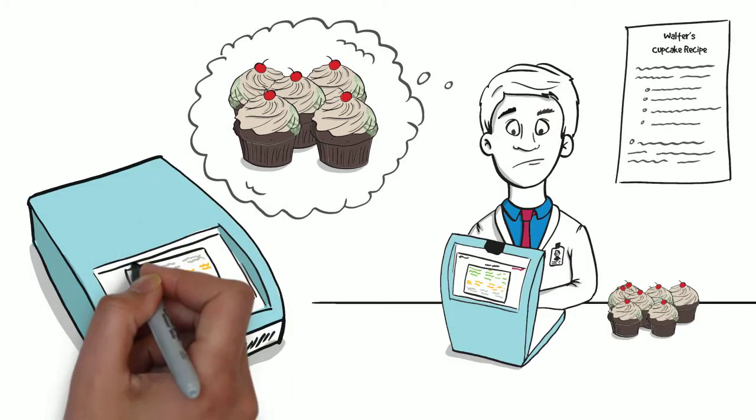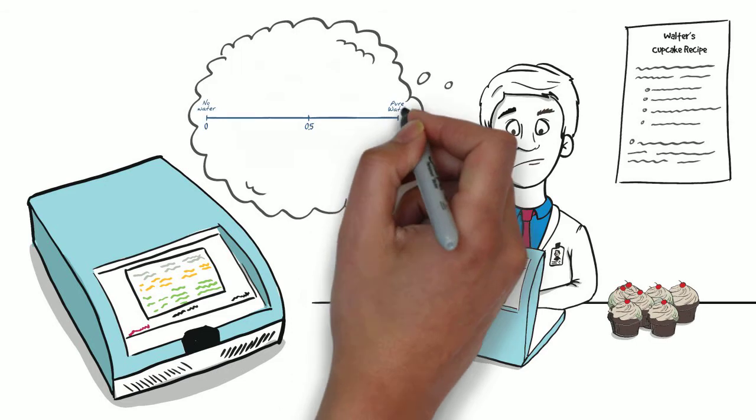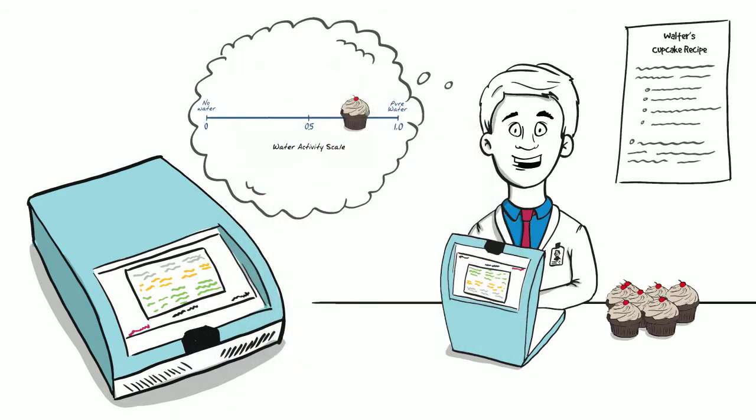If Walter had a Novasina water activity meter, he would have known that the water activity level in his cupcake is too high and he could adjust his recipe to avoid spoilage.